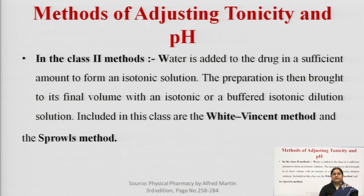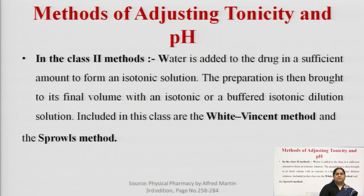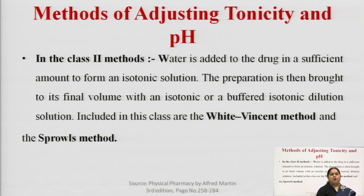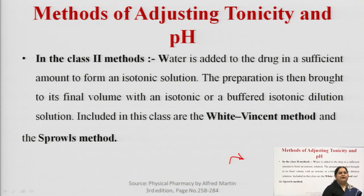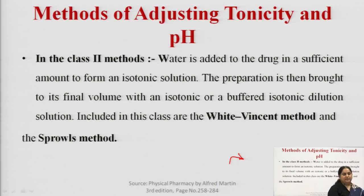Next are the class two methods. In class one we add sodium chloride, but in class two methods, water is added to the drug in a sufficient amount to form an isotonic solution. The preparation is then brought to its final volume with an isotonic or buffered isotonic solution. Under class two we have the White Vincent method and the Sprawl's method.